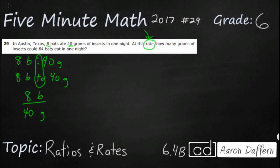So how many grams of insects could 64 bats eat? Now the reason I am so careful with labeling my numbers 8b and 40g is because we're going to need that to make the proportion here. So we're going to set this up as an equivalent fraction. And so we're going to have to make sure that our bats stay with our bats. So that's why our 64 comes up on top here.